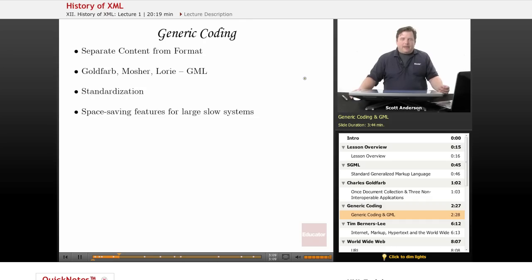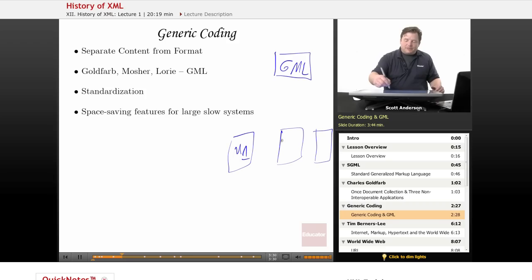And it became the solution to their problem. If they stored information in a central file using GML to markup the contents as to which part of each document represented what, then as far as each of their machines were concerned that they had to format for each particular application...